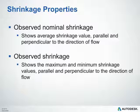Some other values you might see within the shrinkage properties are the observed nominal shrinkage — basically the average shrinkage value parallel and perpendicular to the direction of flow, obtained during shrinkage testing. The observed shrinkage shows the max and min values for shrinkage noticed parallel and perpendicular to the direction of flow during shrinkage analysis. These are there for your reference, and if you look further down, you'll notice there are specific test data sets and values available if you're curious.